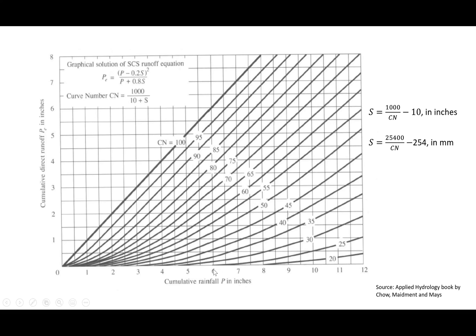For example, if cumulative rainfall is 6 inches, as the curve number increases the amount of direct runoff increases for the same rainfall. So higher curve number means more direct runoff and lower curve number means less direct runoff for the same cumulative rainfall. If we know where our watershed falls on this curve, we can find S — the maximum soil retention — by knowing the curve number. If we know the curve number we can find S, and if we know S we can find direct runoff for a given rainfall.